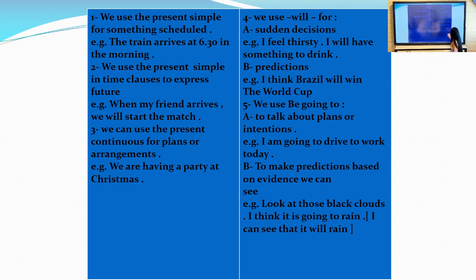The fifth one: we use be going to - be is am, is, or are, going to - to express what? To talk about plans or intentions. When I intend to do something, I don't use will. I use going to - is, am, or are plus going to. For example, I'm going to drive to work today. I intend.